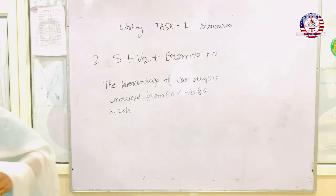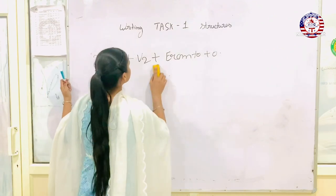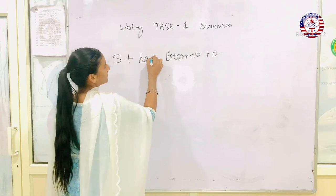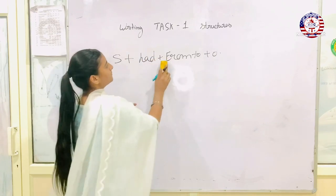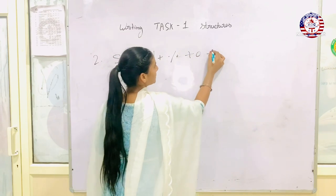The third structure is had plus percentage, and then object, plus year.